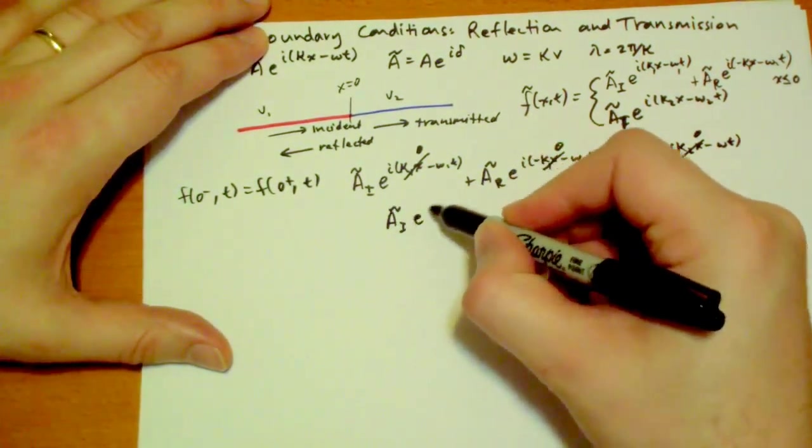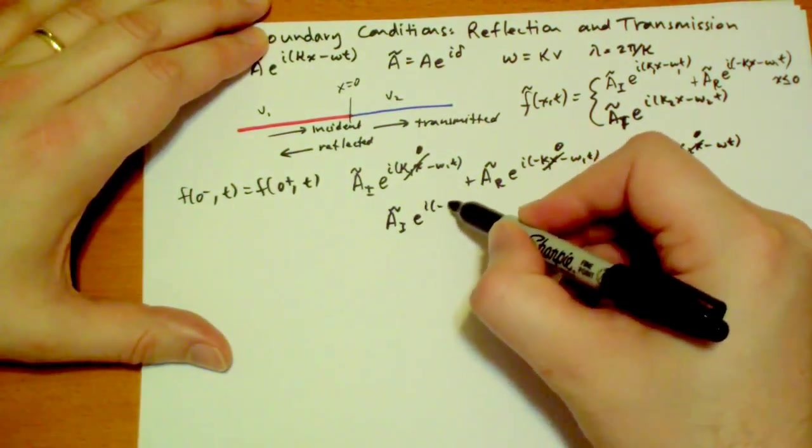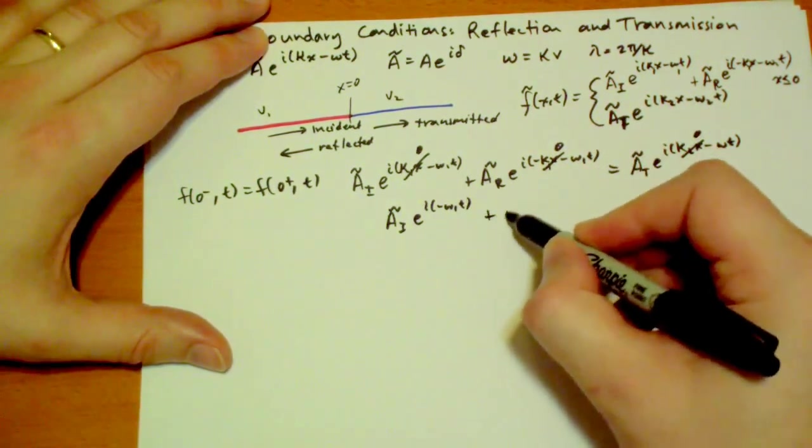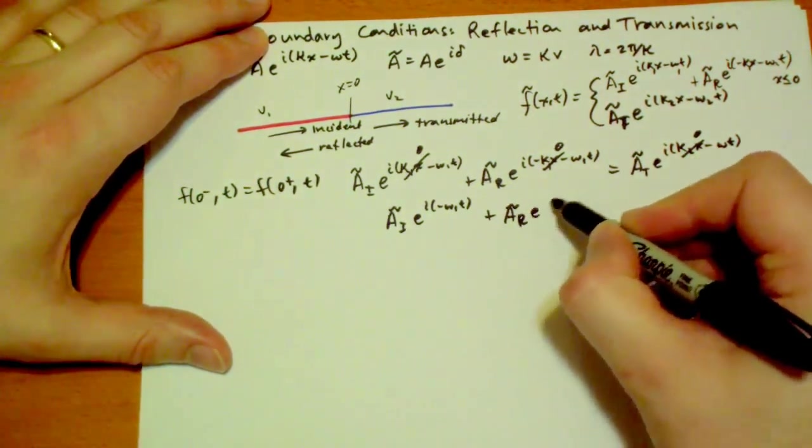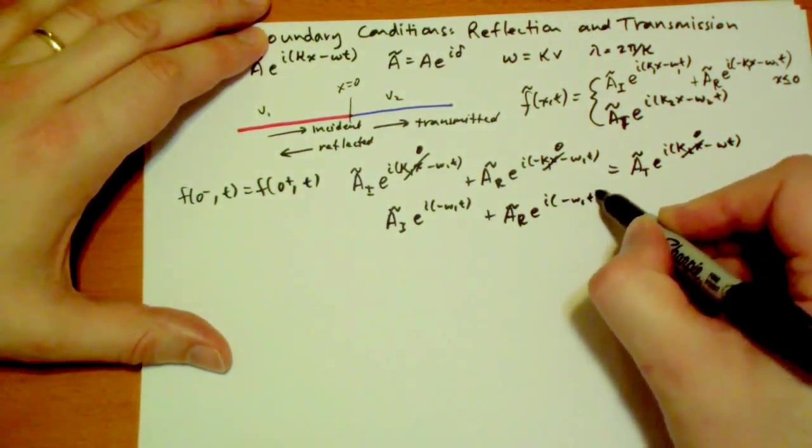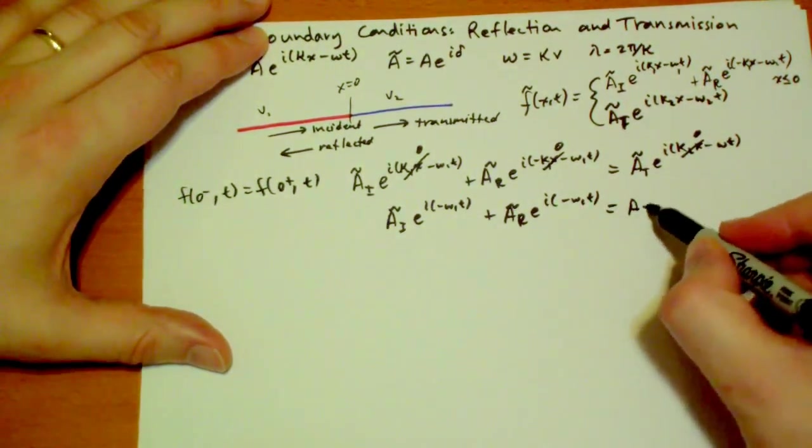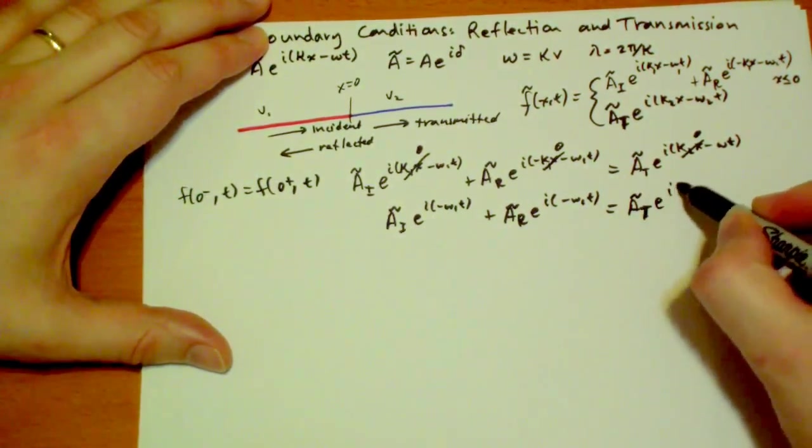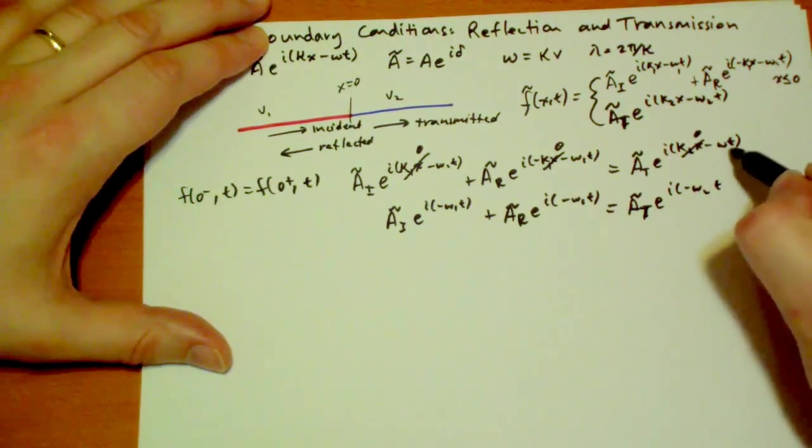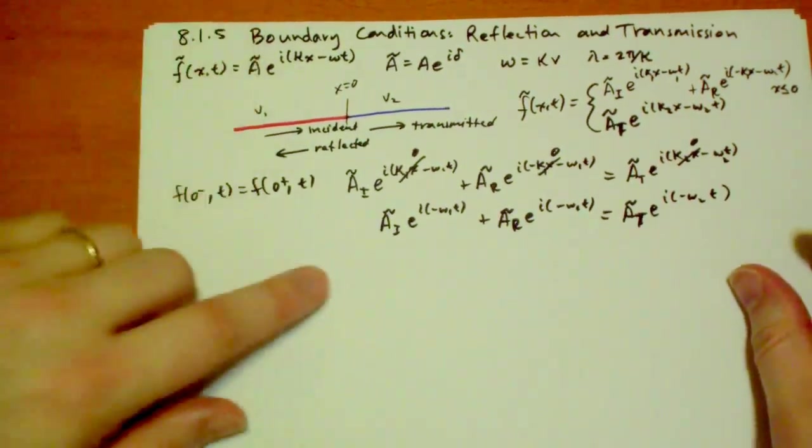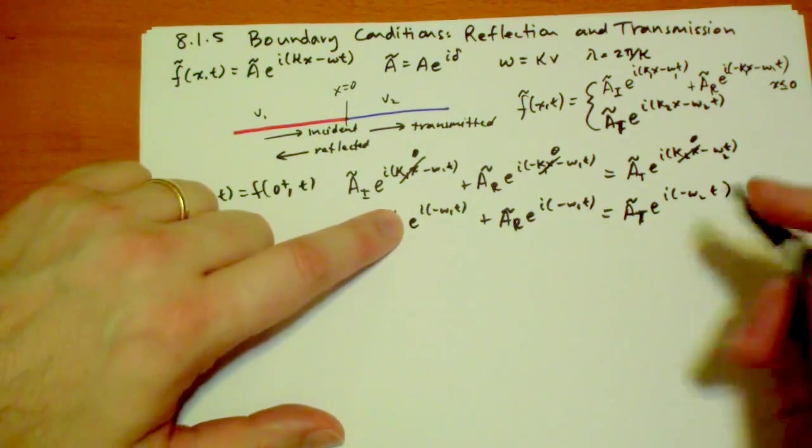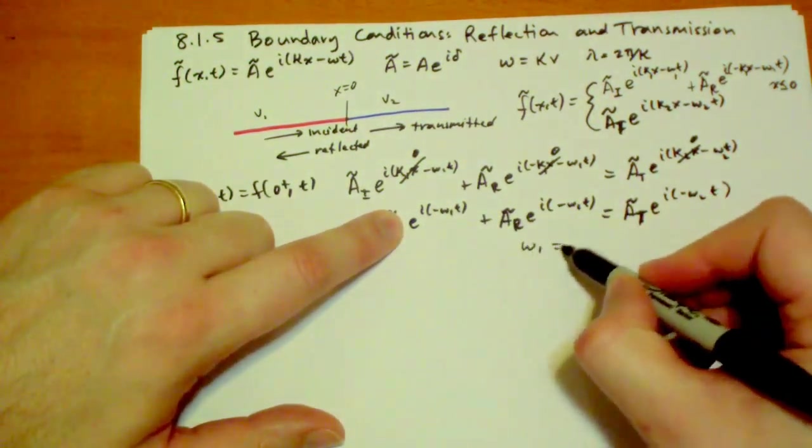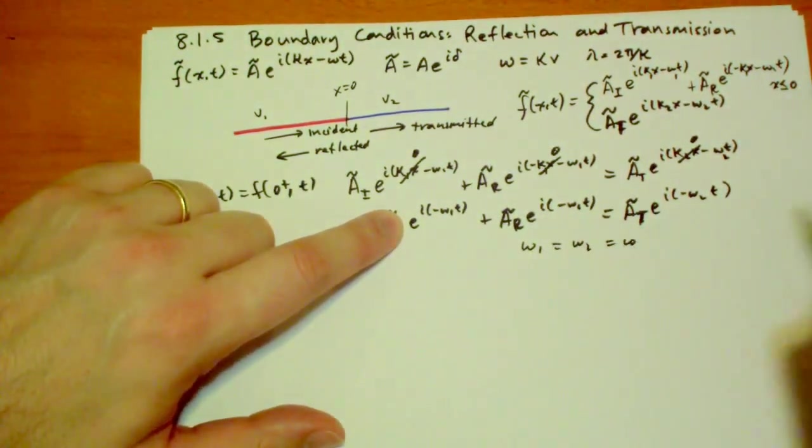The incident wave, e to the i minus omega 1 t, plus the reflected wave, e to the i minus omega 1 t, has to equal the transmitted wave, e to the i minus omega 2 t. That's an omega 2, not omega 1. And just by inspection here, it's obvious that omega 1 has to equal omega 2. We'll just call that omega from now on. So the angular frequency of the wave on either side is exactly the same, even though the velocities are different.